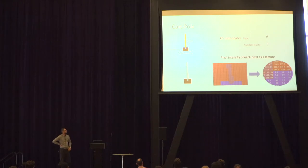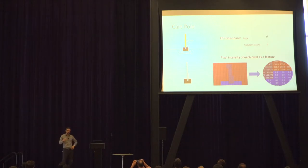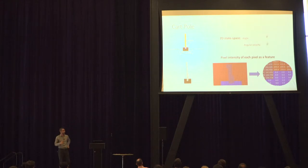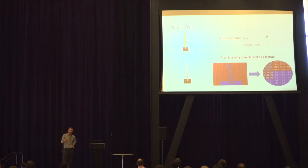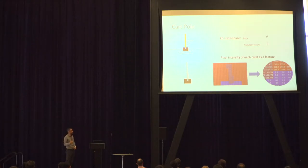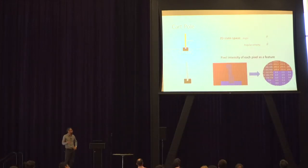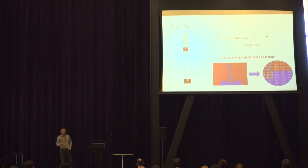In the original cartpole problem, the state space is simple — essentially two-dimensional, focusing on theta and theta-dot (angle and angular velocity of the pole). If the agent maintains balance at each time step, it's success; if the pole passes a certain angle from the vertical line, it's failure. But in our problem setting, we're not dealing with the original state space — we are dealing with image data from an RGB camera observing the cartpole.